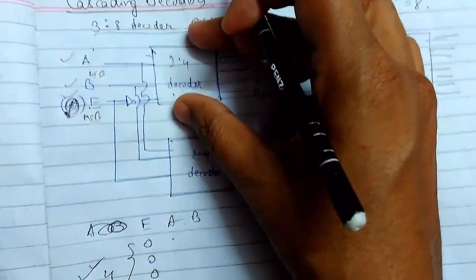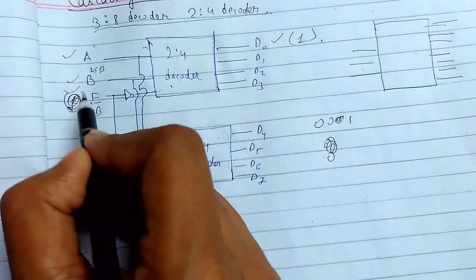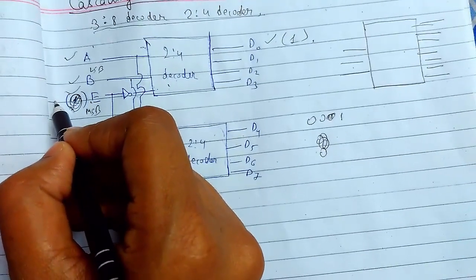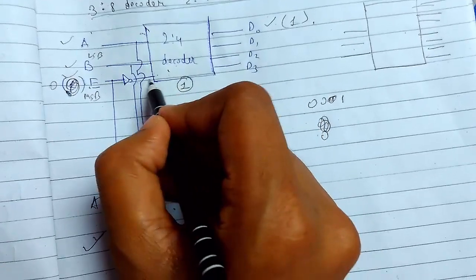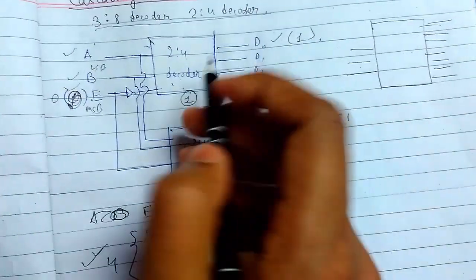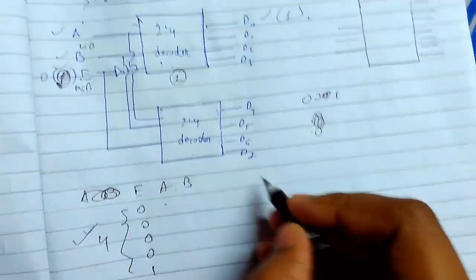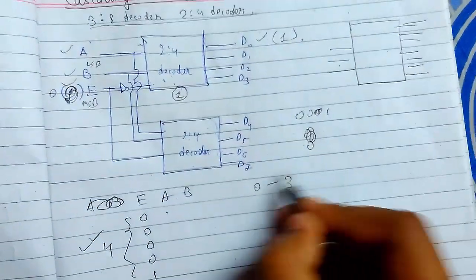We can first operate for first 4 zeros for the first 4 cases. We can set it to 0 and the decoder will get activated because we need high to activate the decoder. So we can operate the first 4 between 0 to 3 decimal values.